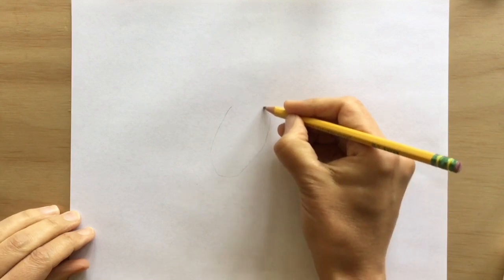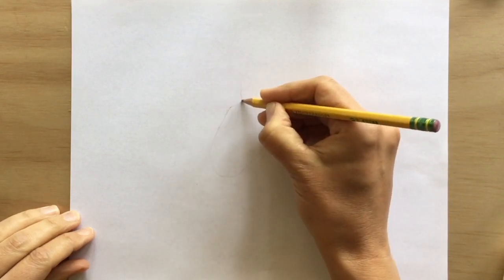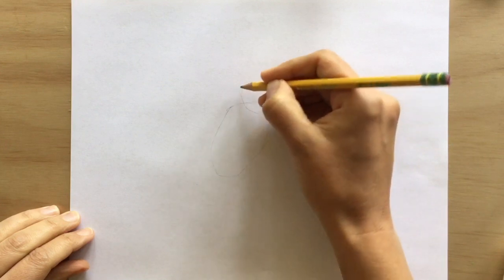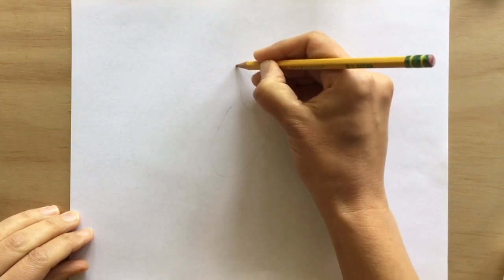Remember, you can pause the video at any time. I start with a pencil drawing, and I draw very lightly. First, I draw a medium-sized oval.